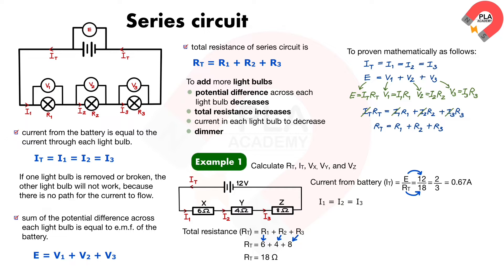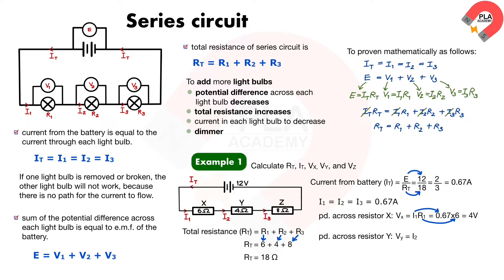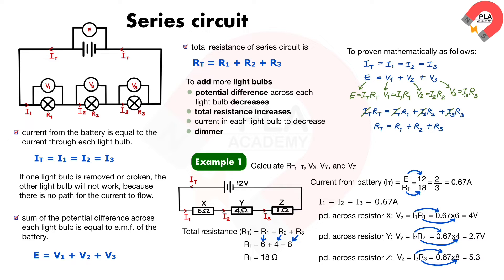I_1 equals I_2 equals I_3 equals 0.67 amperes. Calculate the potential difference across resistor X using V_X equals I_1 × R_1. Substituting I_1 equals 0.67 and R_1 equals 6, so V_X equals 4 volts. For resistor Y, V_Y equals I_2 × R_2. Substituting 0.67 and R_2 equals 4, so V_Y equals 2.7 volts. For resistor Z, V_Z equals I_3 × R_3. Substituting 0.67 and R_3 equals 8, so V_Z equals 5.3 volts.